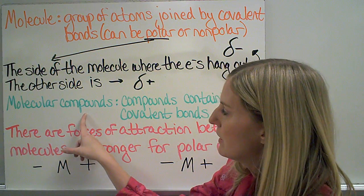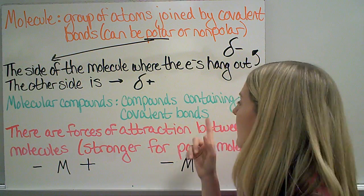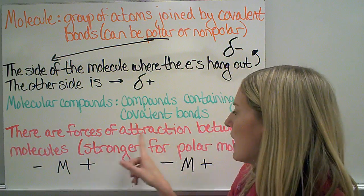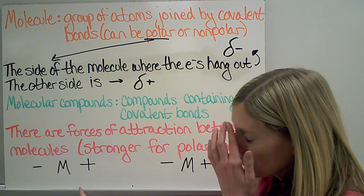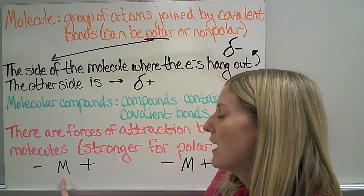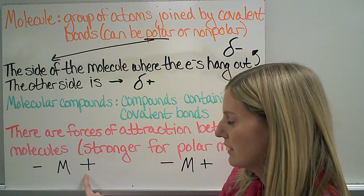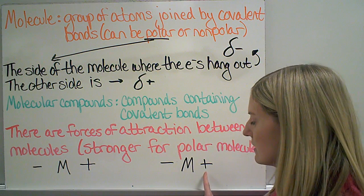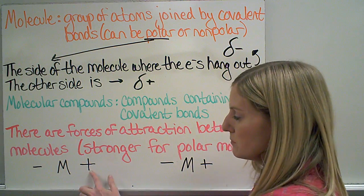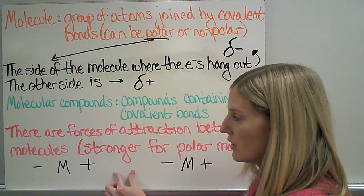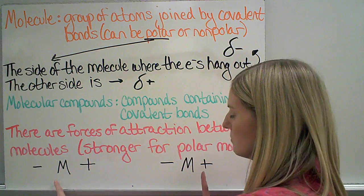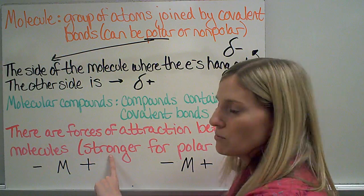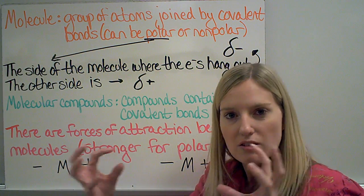Molecular compounds are any compounds that have covalent bonds in them, and there are forces of attraction between molecules. So if I have a molecule with a slightly negative end and a slightly positive end, and another molecule next to it with the same, those positive and negative ends are going to be attracted to one another. The forces of attraction between two polar molecules will be stronger because of the positives and negatives attracting.